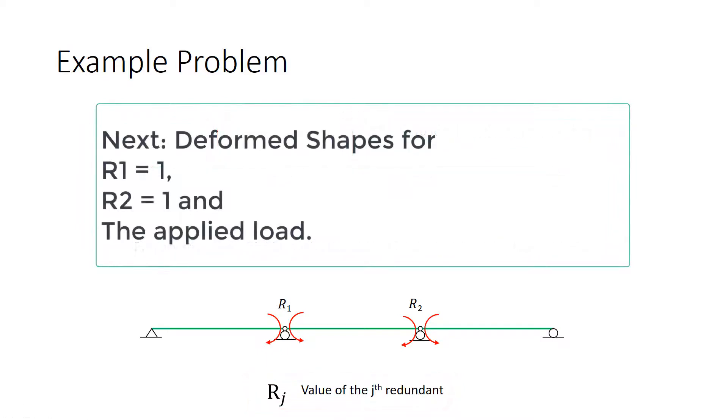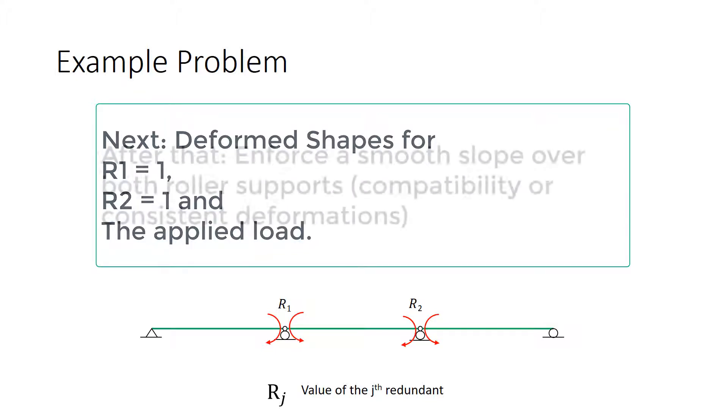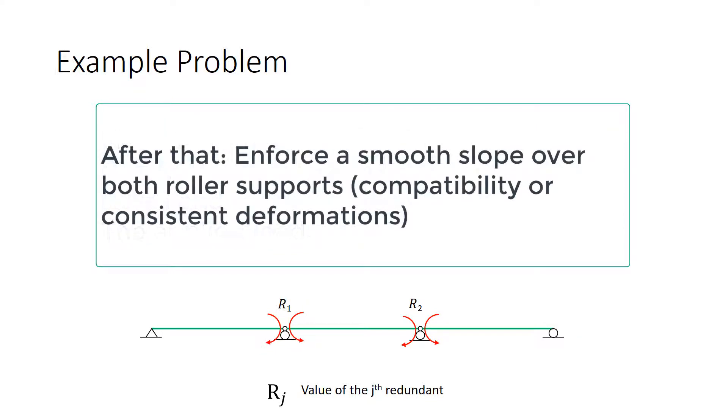In what follows, we'll be looking at the deformations and the deformed shape of the primary structure in three different cases. First, applying a unit load at R1, next applying a unit load at R2, after that applying the applied forces of one kip over the left-hand spans. Then, we'll make sure that all of those deformations are consistent. Let's get started.